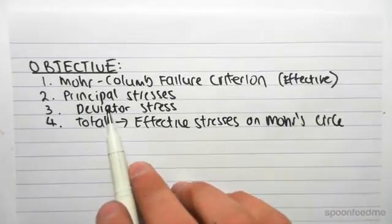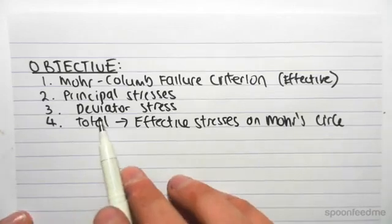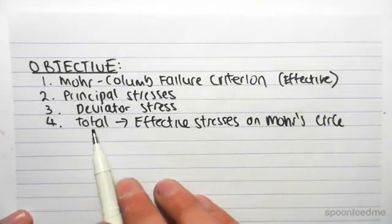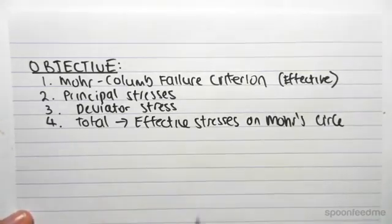We're going to be looking at principal stresses once again. We're going to be talking about the deviator stress and then we're going to have to look at how we go from total to effective stress on a Mohr circle.